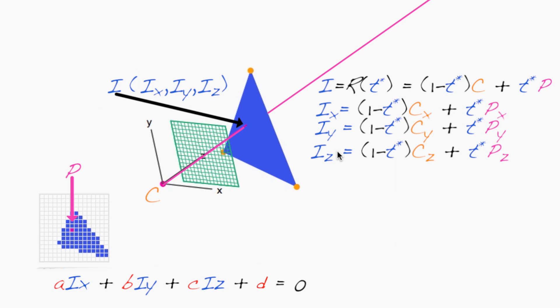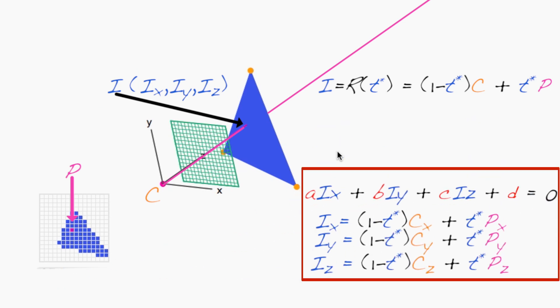Now we have four equations and four unknowns. To solve this system of equations, we can follow the recipe from 2D and substitute the last three equations into the first one.